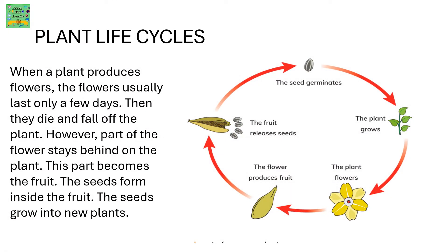When a plant produces flowers, the flowers usually last only for a few days. They die and fall off. However, part of the flower stays behind on the plant. This part becomes the fruit. The seeds form inside the fruit, and the seeds later grow into new plants if taken care of.